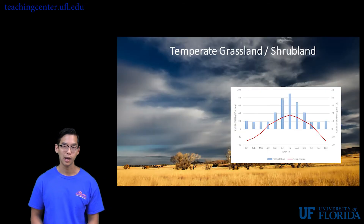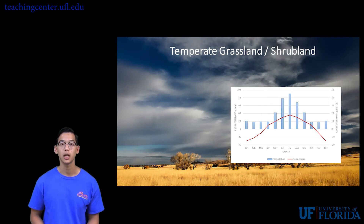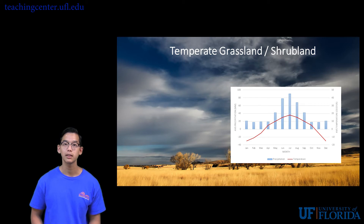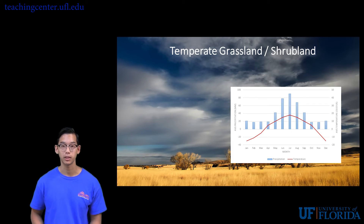The temperate grassland and shrubland biome has hot summers and cold winters. This biome is dominated by grass and organisms such as bison, coyotes, and cheetahs. It is slightly drier than the temperate forest but has similar temperatures.